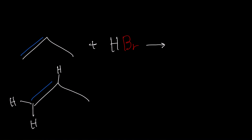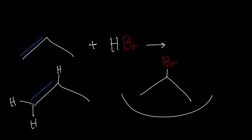So the major product for this reaction is going to have the bromine on the right side of the carbon and the hydrogen on the left side. But we usually don't draw the hydrogens in bond-line structures, so you don't need to include that. All you need to put in your final answer is this.